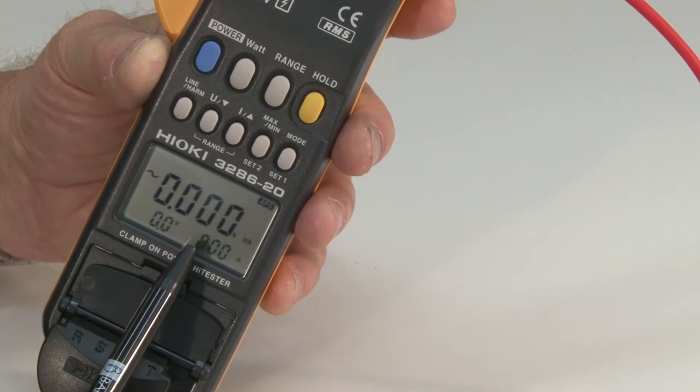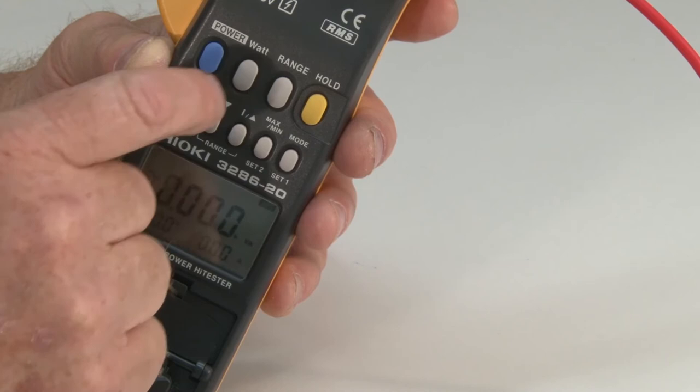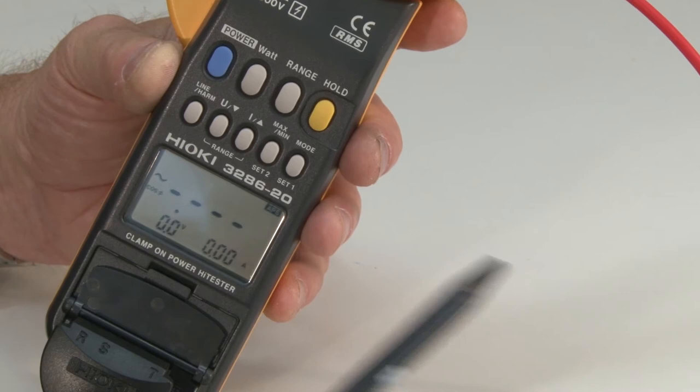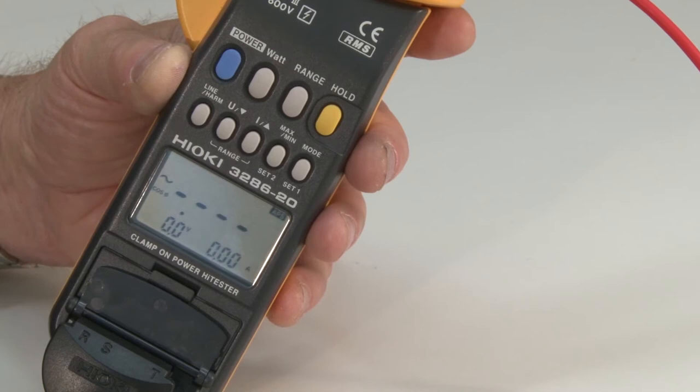Again, we're seeing our current measurement here and our voltage measurement over here. If I press the little watts button again, then we're actually able to display now the actual power factor. This is what we would see, which would be the power factor.